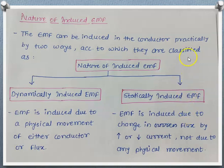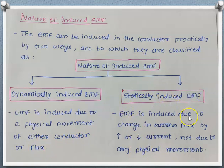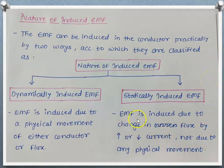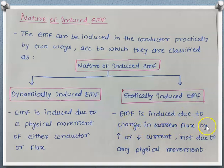We know there are three requirements for production of EMF: first is the conductor, second is the magnetic field, and third is relative motion between conductor and field. Here relative motion is obtained with the help of physical movement of either conductor or flux. But in case of statically induced EMF, this relative motion between conductor and magnetic field is obtained with the help of current.